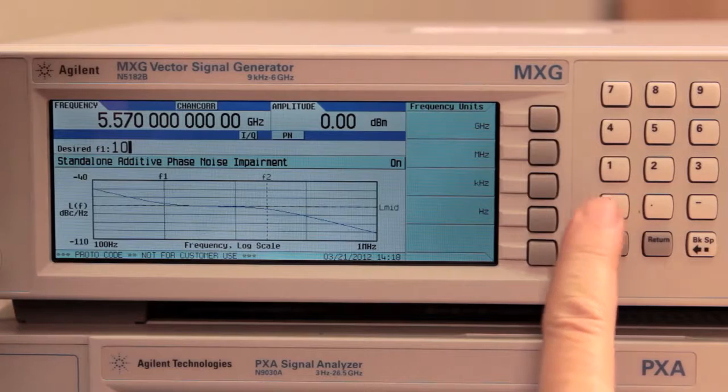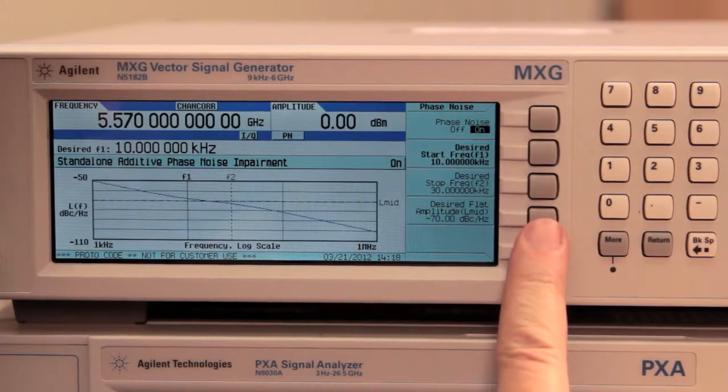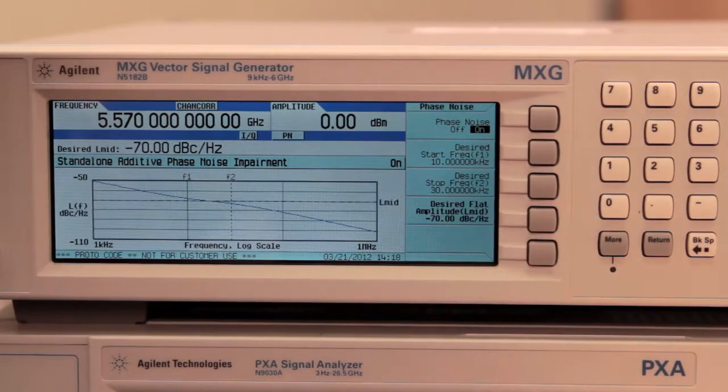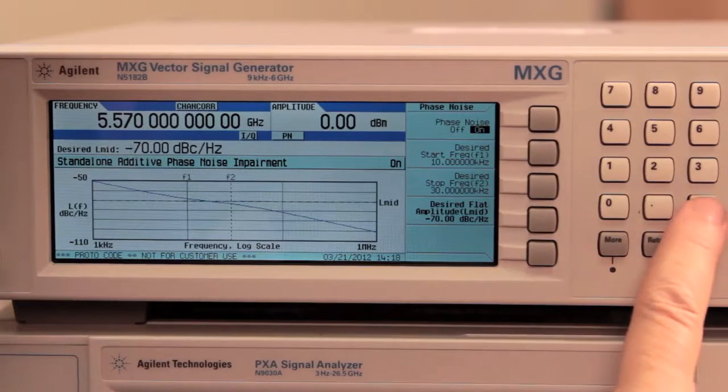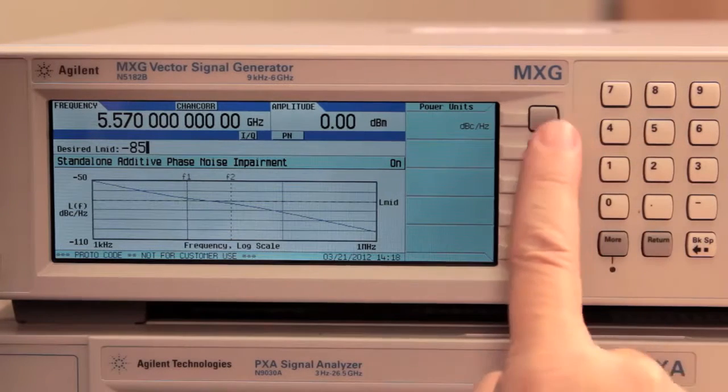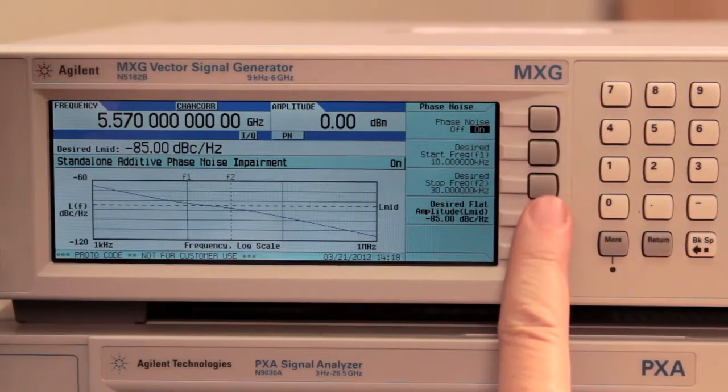The phase noise injection feature of the MXG provides a way to selectively degrade the signal's phase noise to evaluate the effects. Close-in, intermediate, and wide offset phase noise can be set independently.